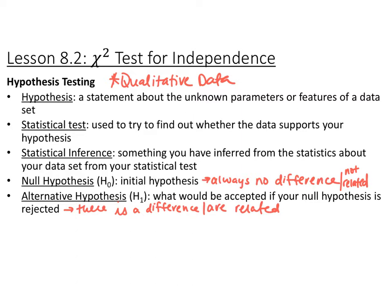When we talk about a more specific definition of hypothesis, we're going to have two types. The null hypothesis, represented as H sub-zero, is your initial hypothesis — there's always no difference; it assumes the variables are not related to each other. Versus your alternative hypothesis, H sub-1, which is what you're trying to prove: that the two variables are related, or that there is a difference between the two things being compared.